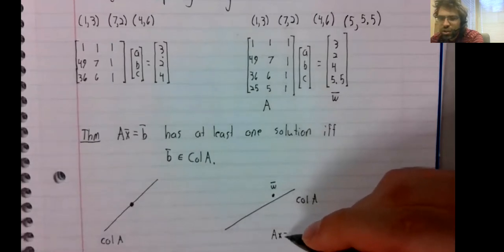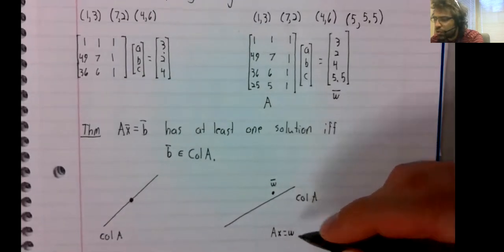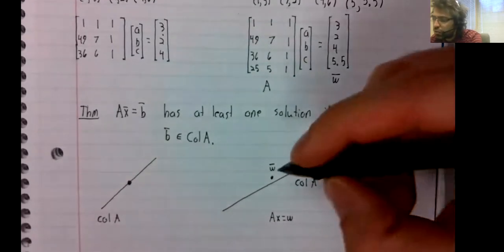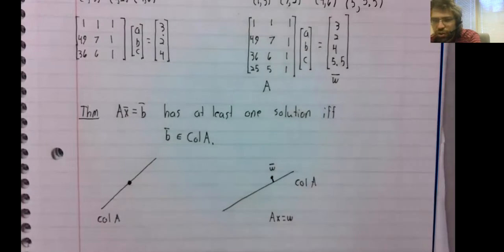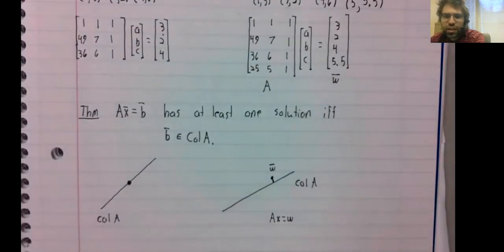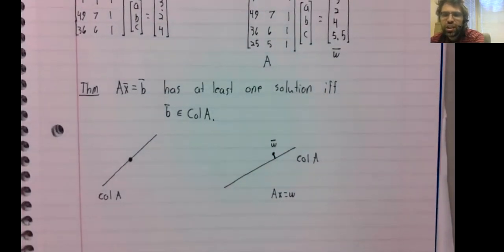Ax = W has no solution. But W is near points in the column space.